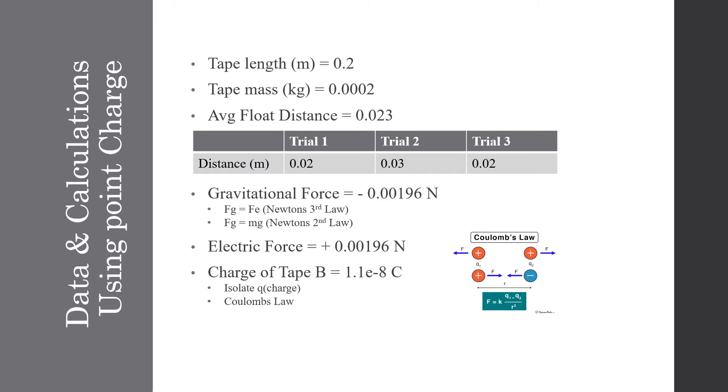So the data that we used in the beginning with the point charges is that we're going to have a tape length of 0.2 meters, a tape mass of 0.0002 kilograms, and then the average float distance was 0.023 meters, which was the average of three different trials.